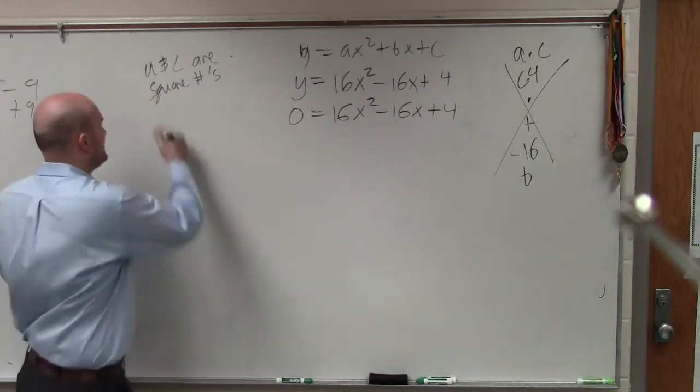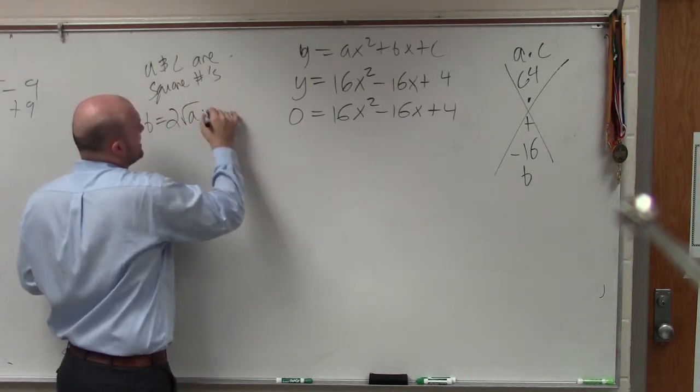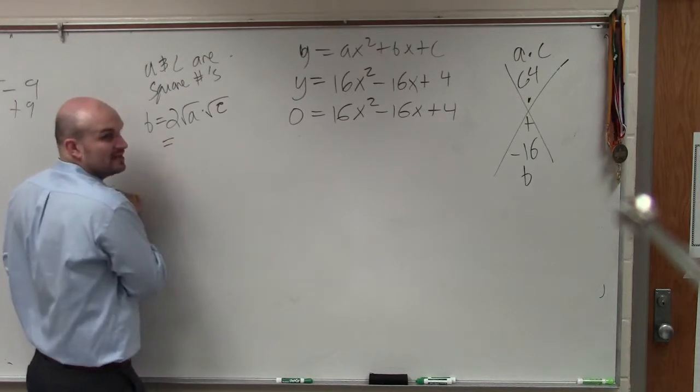Now, in the last example, b had to be c. In this example, b has to be 2 times the square root of a times the square root of c. So let's see if that works.